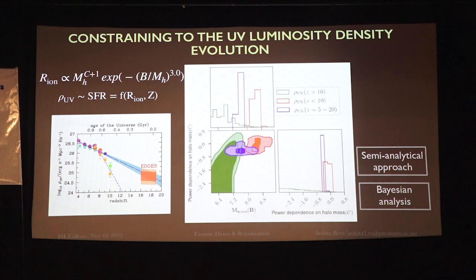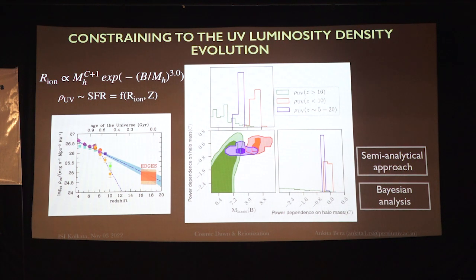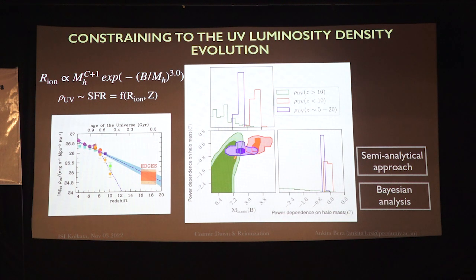Here is the posterior distribution of parameters B and C. We did this analysis for three redshift ranges: Cosmic Dawn greater than redshift 16, less than 10, and redshift 5 to 20. We see that the B value has a tendency to fall between 10 to the power 6 and 10 to the power 8 solar masses, which is quite similar to what is found in numerical simulations.